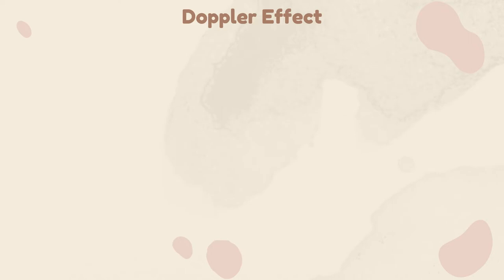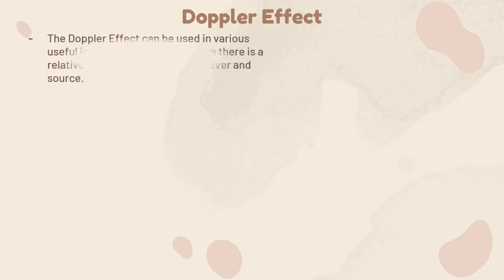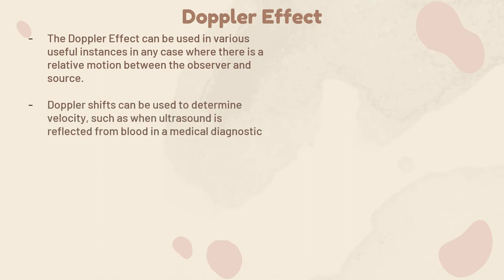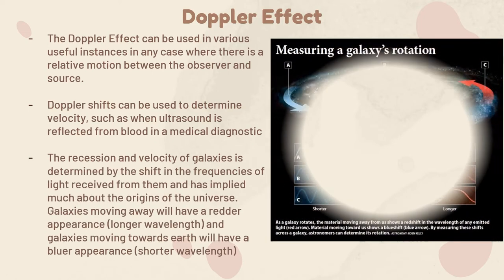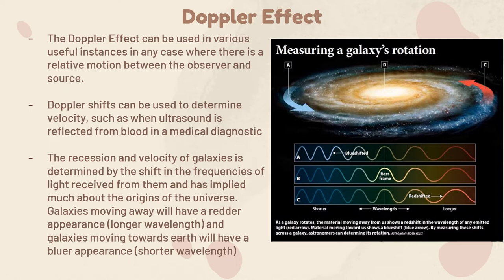The Doppler effect is a useful phenomenon because whenever there's relative motion between an observer and a source, we can use it to calculate things like velocity. One application is measuring blood flow through an artery or vein — an ultrasound can be reflected off the blood back to a receiver to calculate its velocity. Another interesting application is determining the movement of galaxies, as observed from Earth through a telescope.